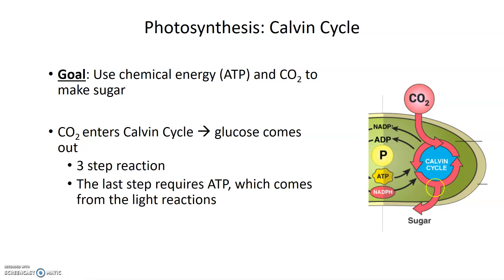This happens in a series of three steps — you just need to know that CO2 goes in and sugar comes out. The last step of the Calvin cycle requires energy input, or ATP, and that's what comes from the light reactions.